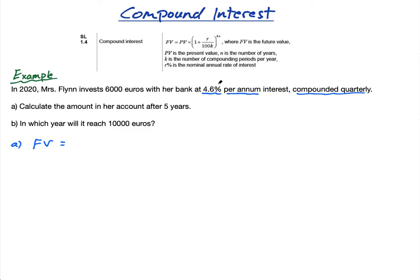In this case K will be 4, and r is 4.6. That's quite straightforward. So let's write out those things: PV equals 6,000, that's the present value she's invested. n equals 5 because it's five years. K is the number of compounding periods per year, which in this case is 4.